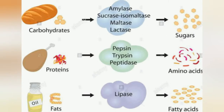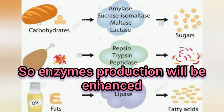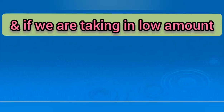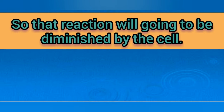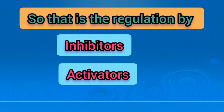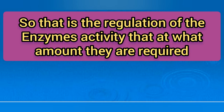For example, if we are taking a high amount of lipids or carbohydrates like sucrose in our diet, enzyme production will be enhanced. If we are taking a low amount and the reaction is not required, the cell will diminish that reaction according to need. This is regulation by inhibitors and activators — activators activate the reaction and inhibitors inhibit it.